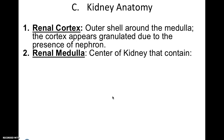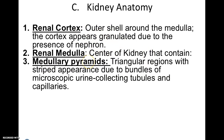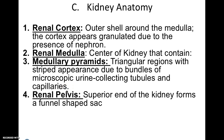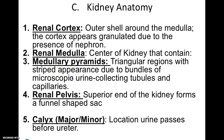The renal medulla is the center part of your kidney. We started a little more superficial and now we're going deep. The center of the kidney contains pyramids — triangular-shaped regions that are striped due to a whole bunch of tubules and capillaries tangled in there. You have the renal pelvis, which is at the superior end of the kidney and forms a funnel-shaped sac. Then you have the calyx — major and minor — which is the location urine passes through before the ureter. The major is larger and the minor is smaller.